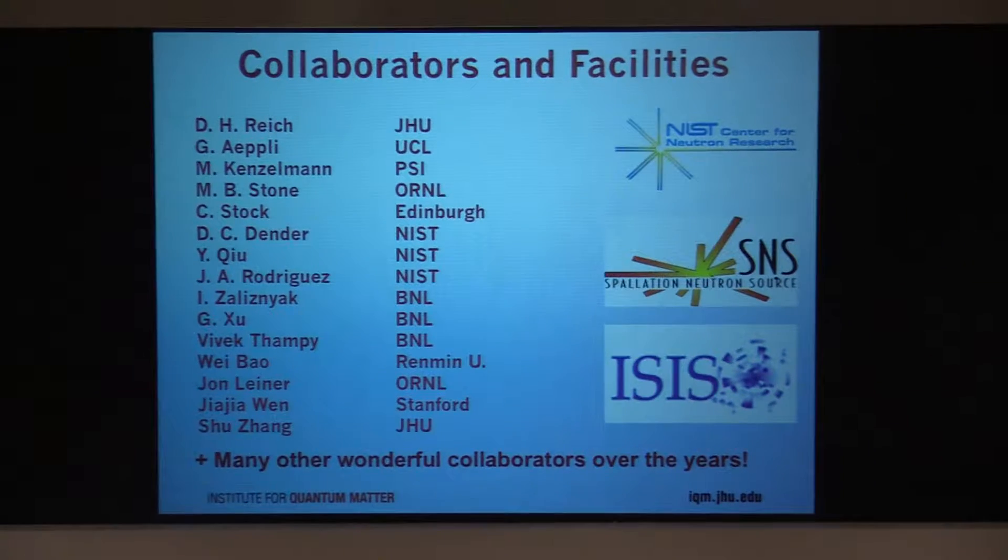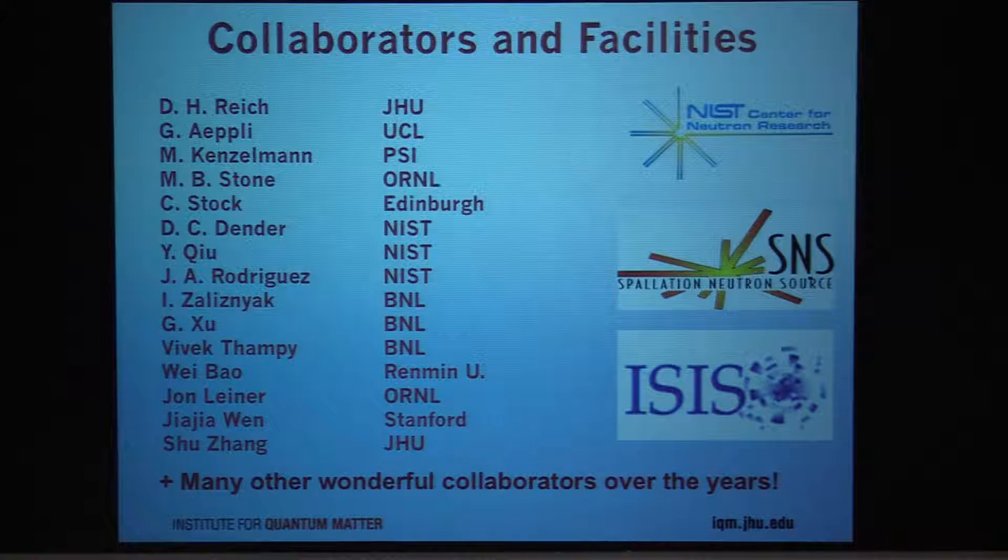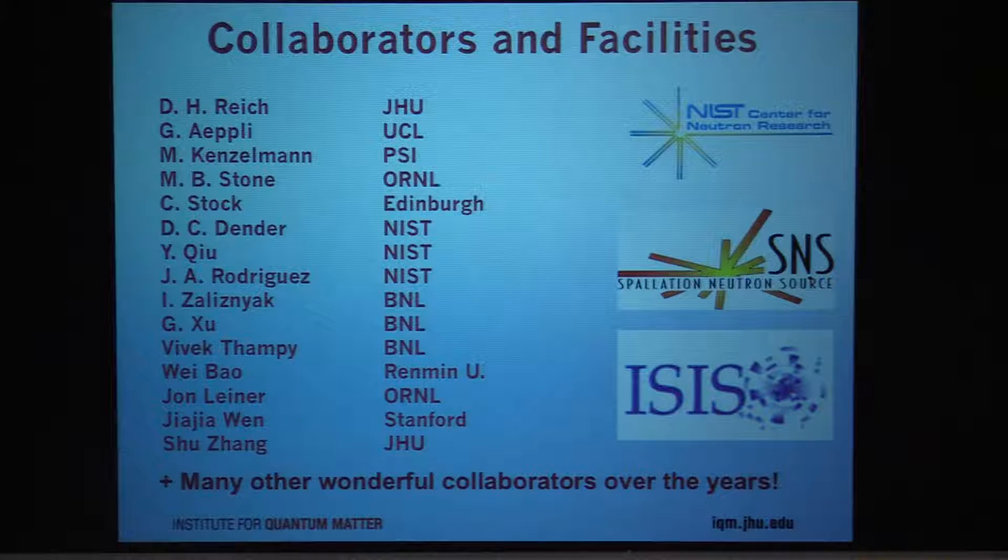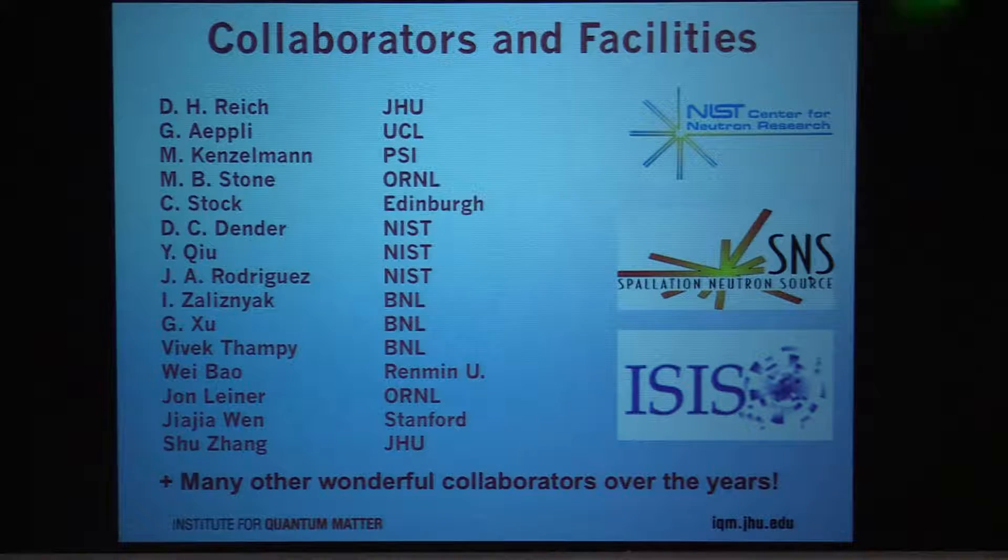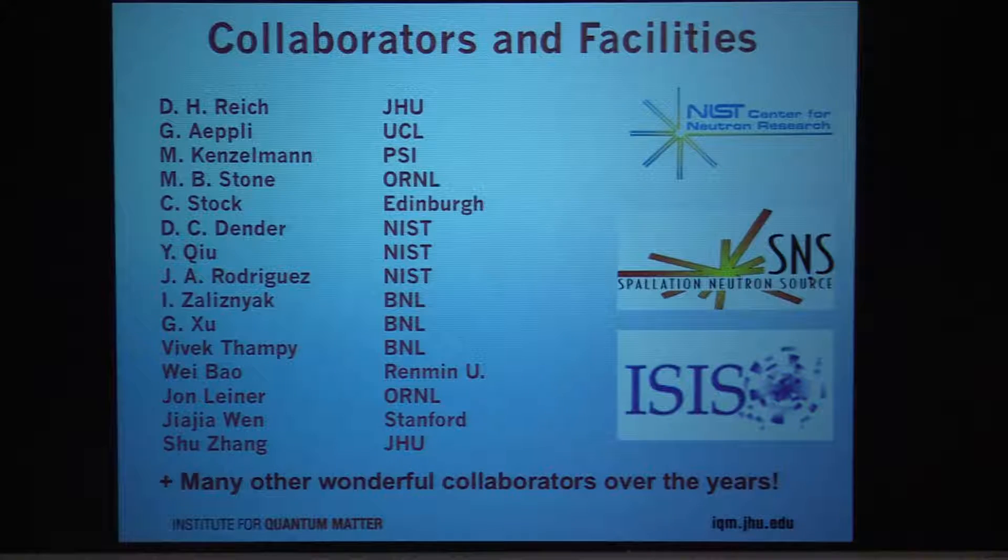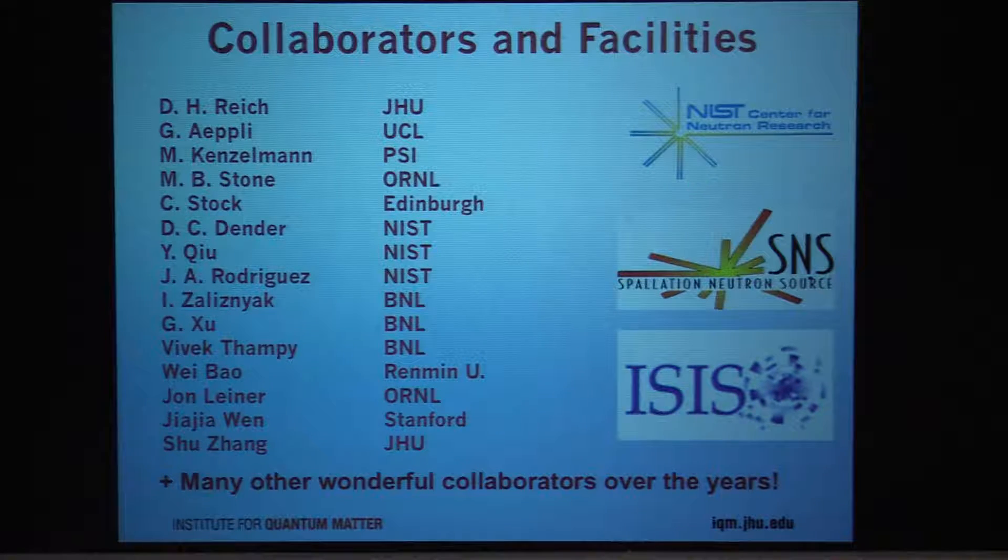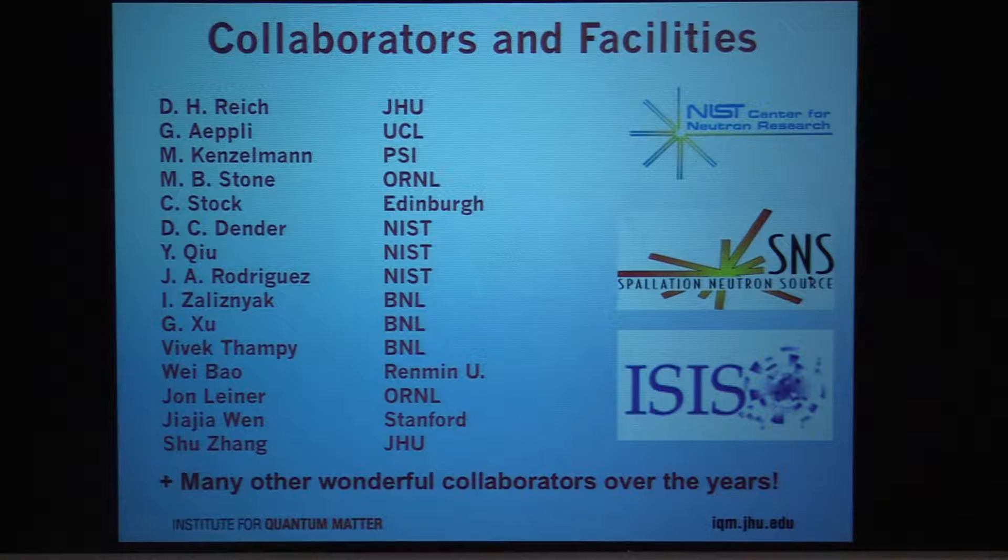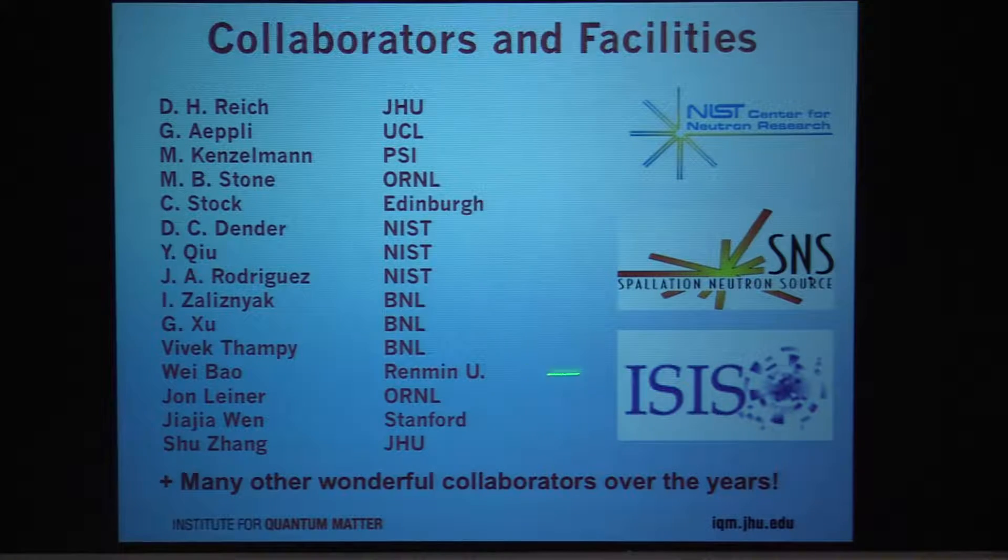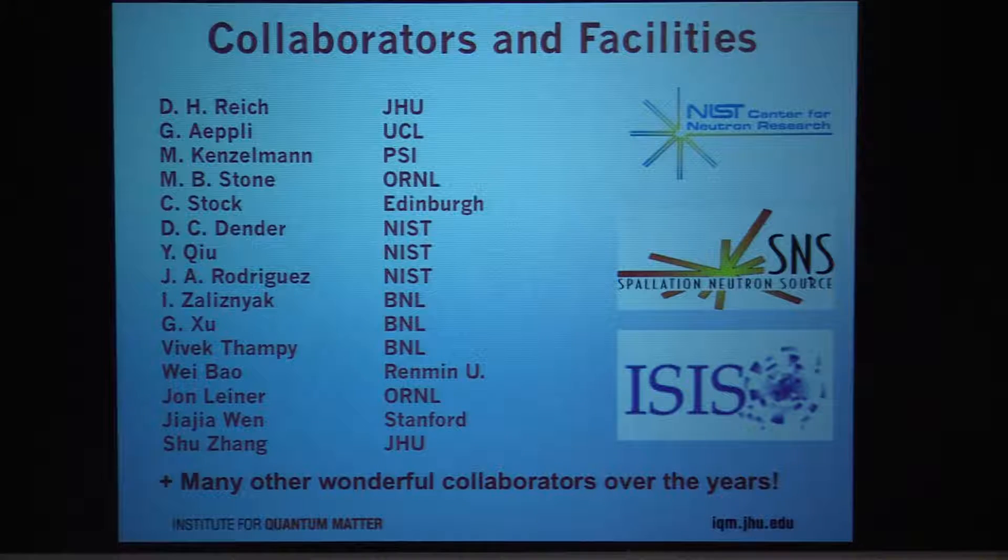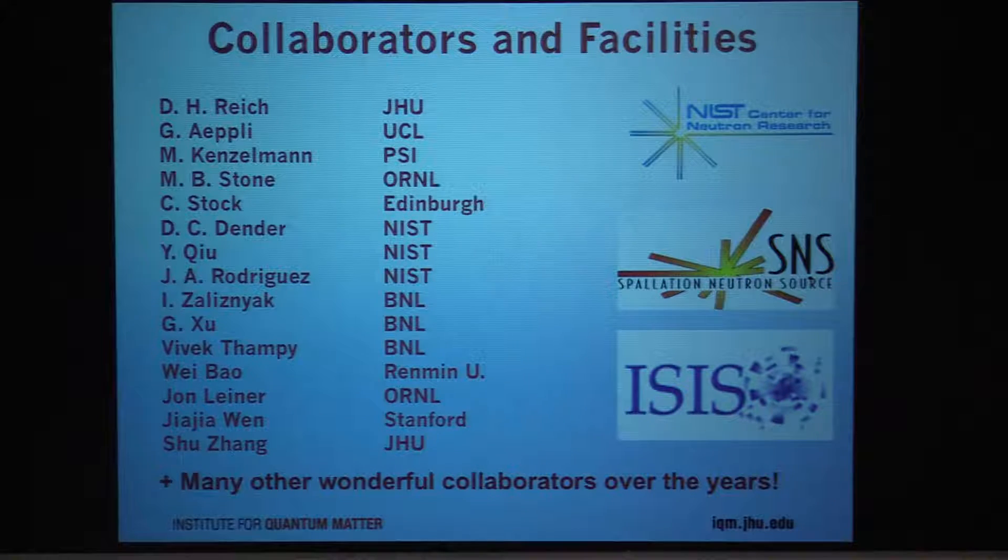Over the years I've worked with a lot of people and I just want to list some of them up here. It's been really important to collaborate with many different students, postdocs, and faculty. And it's also been very important to have facilities where you can actually do these kinds of experiments. In recent years the experiments are typically done in Maryland - we have a research reactor there at NIST. There's another facility in Oak Ridge, Tennessee. The Spallation Neutron Source is there as well as an 80 megawatt reactor. And sometimes we travel to other places like the ISIS facility in the UK.